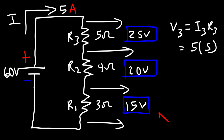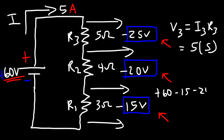Notice that if you add up 15 plus 20 plus 25, it gives you 60. The voltage of the battery is equal to the sum of all of the voltage drops across those resistors. This is Kirchhoff's voltage law, which states that as you go around a circuit in a loop, the total voltage will be zero. The battery increases the energy of the circuit by 60, while the resistors consume energy, so they have negative values. Positive 60 plus negative 15 plus negative 20 plus negative 25 equals zero. Because the energy that flows into a circuit must equal the energy that comes out, Kirchhoff's voltage law always applies whenever you have a closed loop.